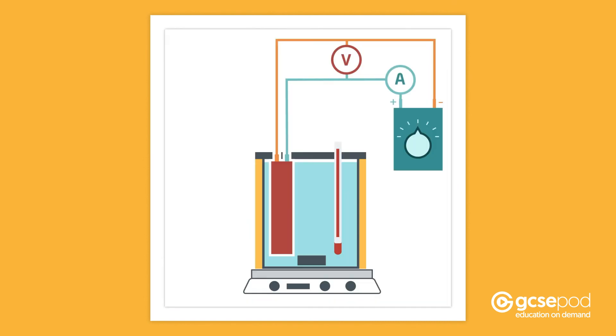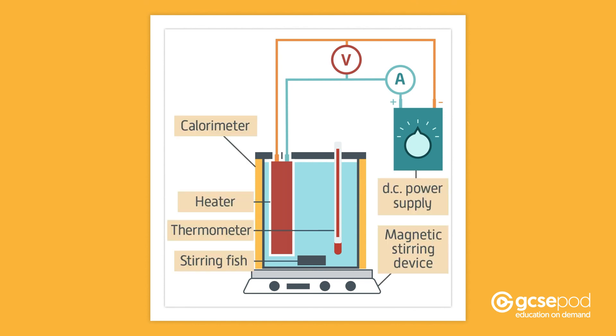Now let's look at how you calculate the specific heat capacity of a liquid such as water. For this experiment, you need to set up standard laboratory apparatus. You'll need a voltmeter, ammeter, laboratory power supply, a calorimeter, a magnetic stirring device, a stirring fish, heater and thermometer. Set them up as shown.